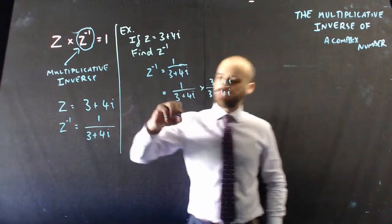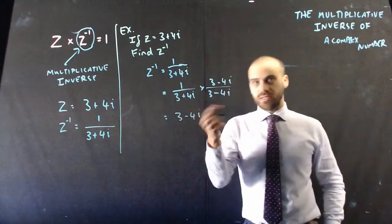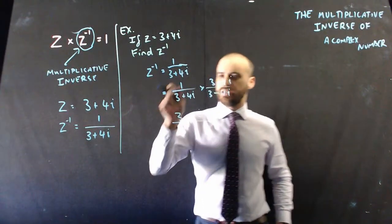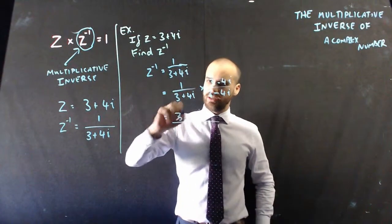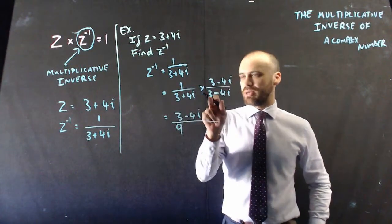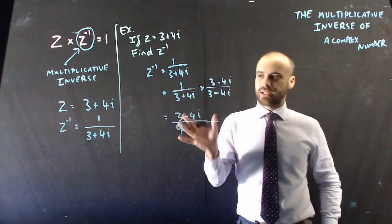Okay, so 1 times 3 minus 4i is 3 minus 4i. And then this is going to, we're going to use our FOIL method. So 3 times 3 will be 9. 4i times 3 will be positive 12i. Negative 4 times negative 4i, so those are going to cancel each other out.